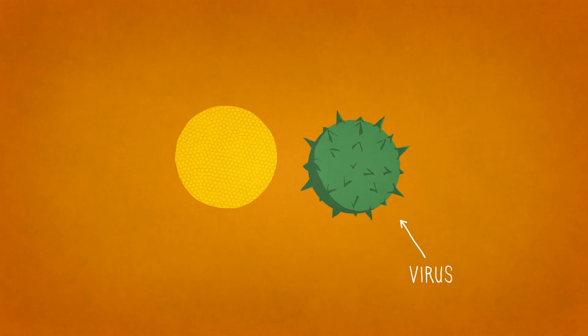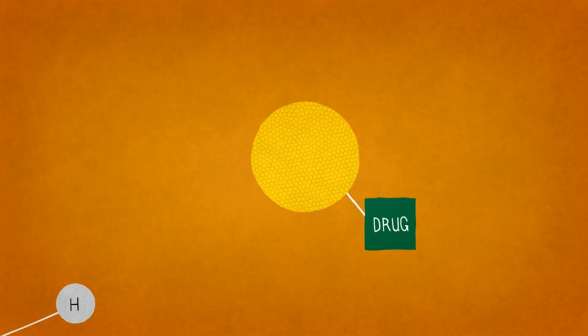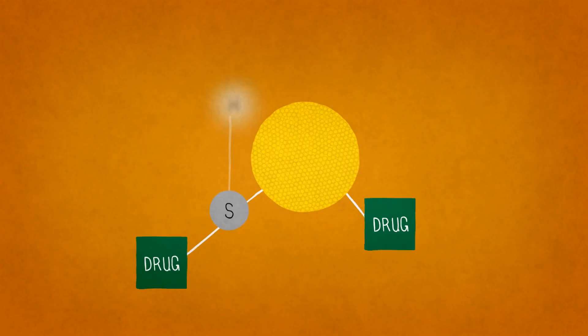This gold nanoparticle is the size of a virus. At this scale, it's easy to manipulate and harness the surface properties of gold. For example, molecules like drugs can be attached to the surface with the help of sulfur atoms, which can form covalent bonds with gold.